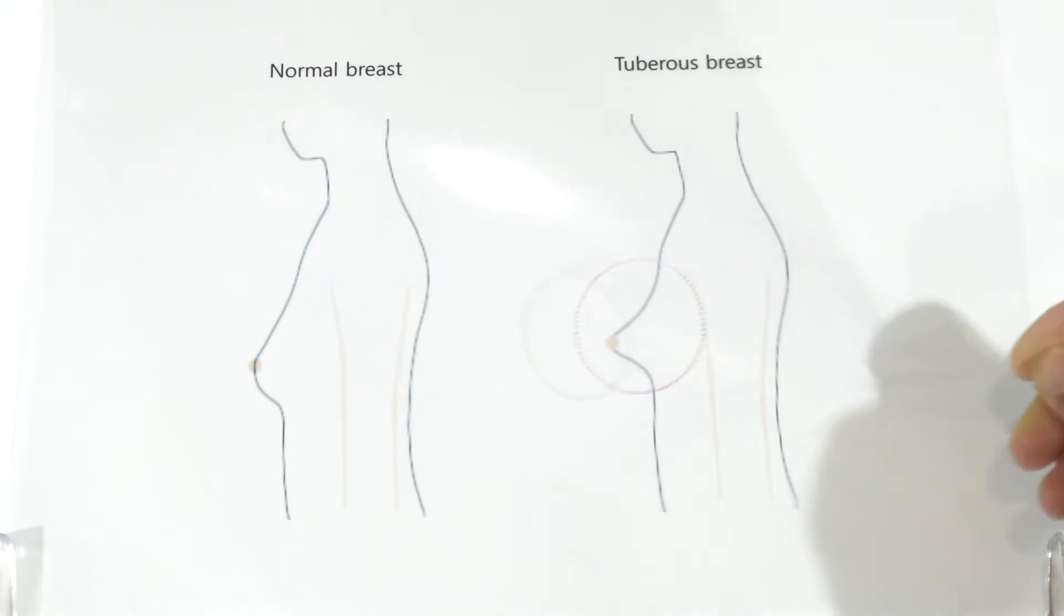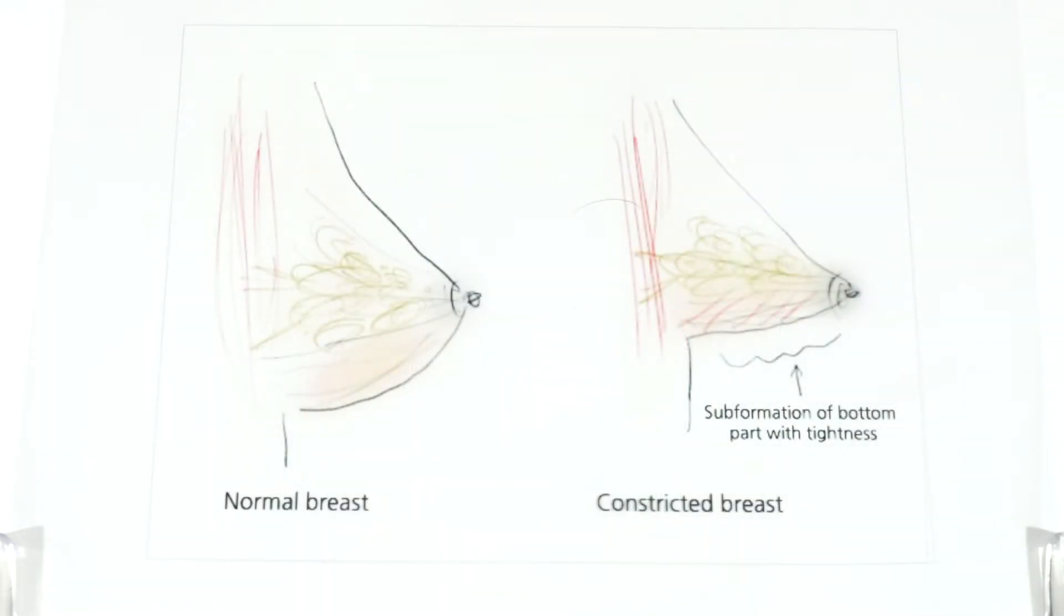Here is another example. It is a constricted breast or the tuberous breast. When a tight implant enters the breast, you need to spread out the bottom breast tissue.